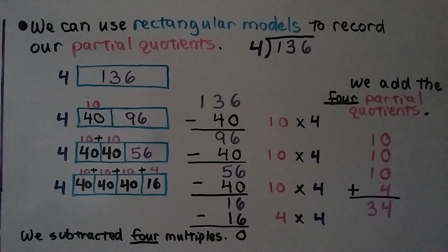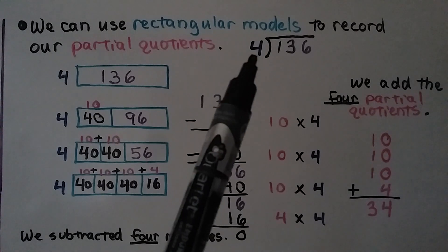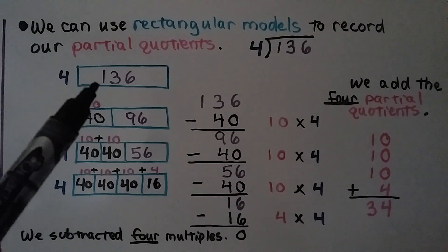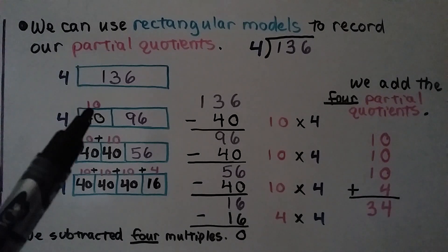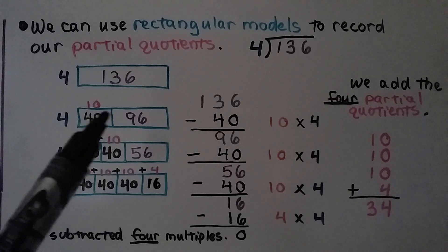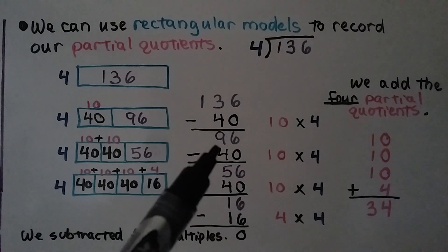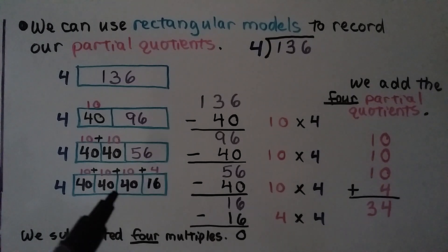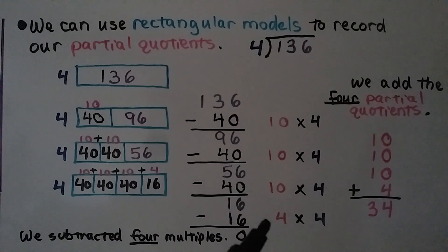We can use rectangular models to record our partial quotients. We have 136 divided by 4. We need to find how many times 4 will fit into 136. We make a rectangle and write our dividend 136 inside with divisor 4. We think, 10 times 4 is 40, so we subtract that, leaving 96. We subtract another 40, leaving 56. We take away another 40, leaving 16. We have 10 plus 10 plus 10 plus 4. We add the 4 partial quotients and get 34.